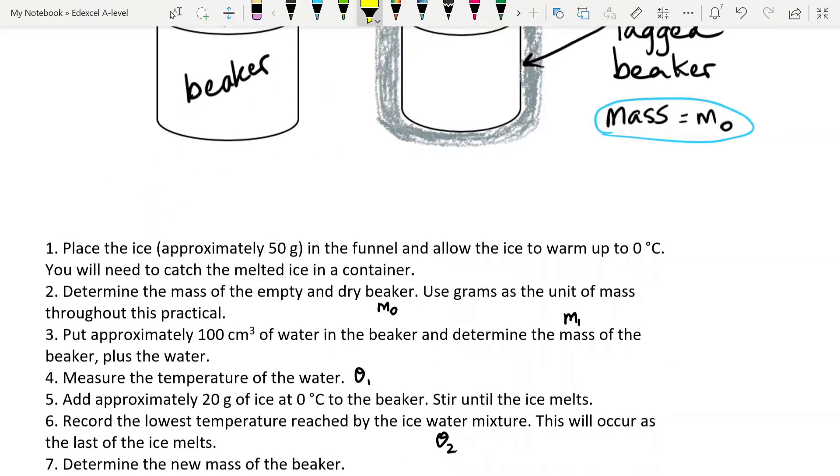What are we going to do with this? You take the ice, about 50 grams of it, you don't have to be too fussy about that, let it warm up to zero degrees, like I said, and catching the melted ice in a container, a beaker. This is your M0 that you've measured here, of an empty dry beaker with the lagging around it.